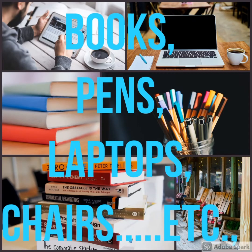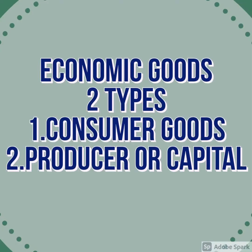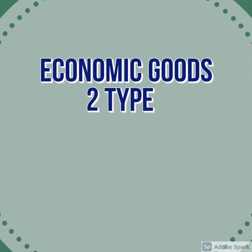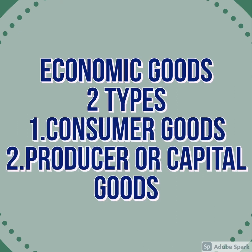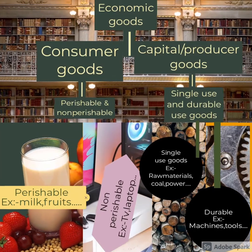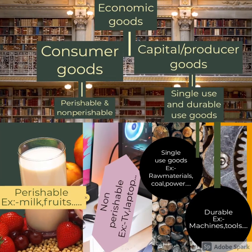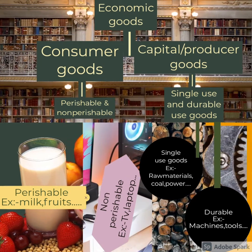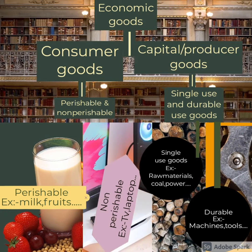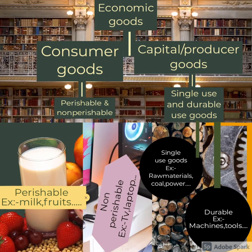Economic goods are again of two types: consumer goods and producer goods or capital goods. Consumer goods are again of two types — perishable and non-perishable or durable goods. Examples of durable goods are televisions and computers. Examples of perishable consumer goods are milk, vegetables, and fruits.